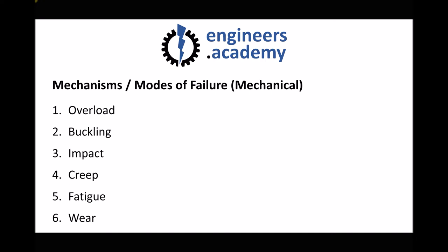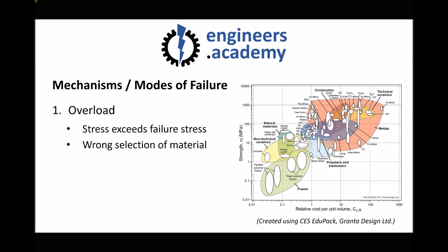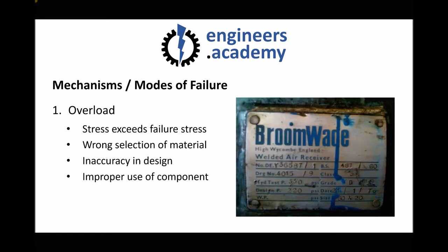First of all, we have overload. During overload failure, the stress that the engineering material or component is being subjected to exceeds the failure stress of the material. There are a number of different reasons why this might occur. First, it might be because the material selected isn't appropriate for the given application. This problem is likely to arise during the design process — when design calculations have been carried out inaccurately or something has been overlooked, the material selected for the application is not suitable. Another reason why overload failures might occur is because of improper use of the component.